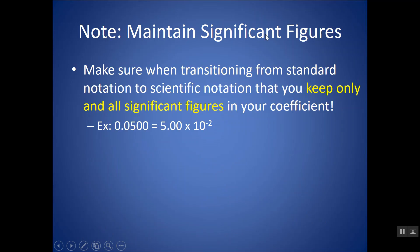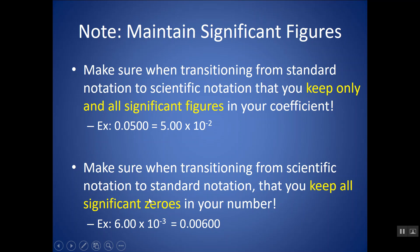Just make sure you maintain the significant figures. When transitioning from standard notation to scientific notation, keep only and all significant figures in your coefficient. If a decimal point is present, start from the first non-zero on the left — that and everything after is significant. Make sure you have the same number of sig figs in your scientific notation. The same applies in reverse: when transitioning out of scientific into standard, keep all significant zeros. You should feel comfortable going between scientific and standard notation in either direction, maintaining significant figures throughout.